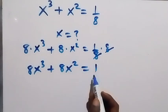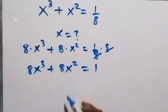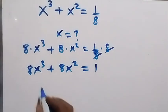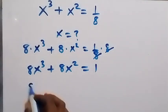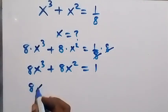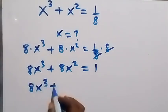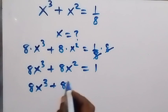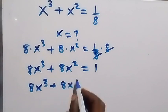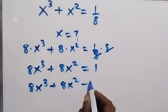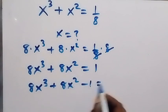Then let's take this 1 to this side, and this becomes 8x^k plus 8x squared minus 1 equals to 0.